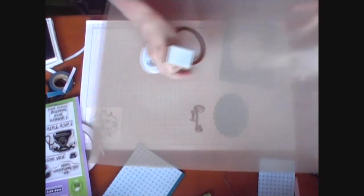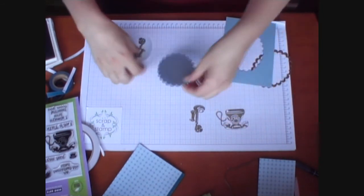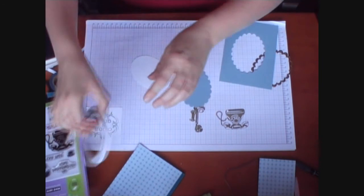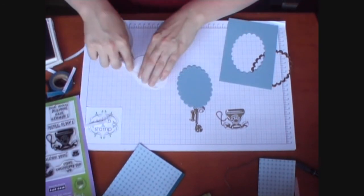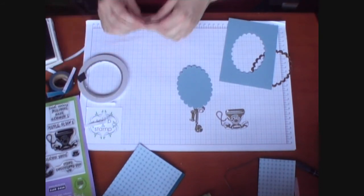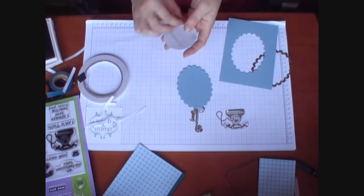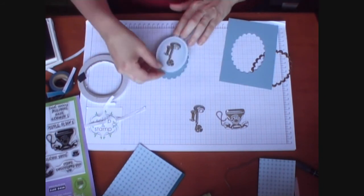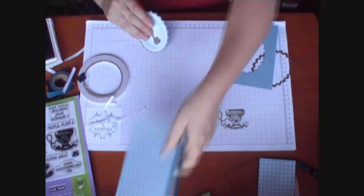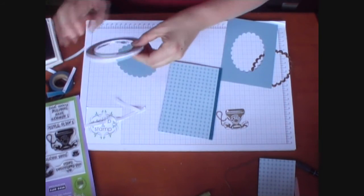I'll just pop all this to the side. Now we might mount our telephone onto the scalloped cardstock, just with a bit of double sided tape. Center it on there. And we'll pop it onto the front of our little book, just with some more double sided tape.